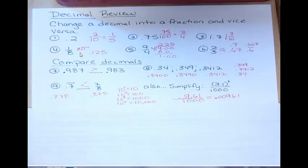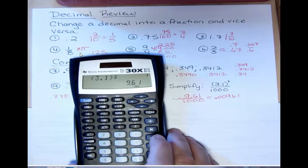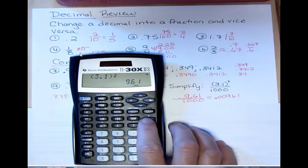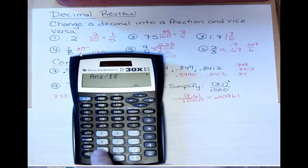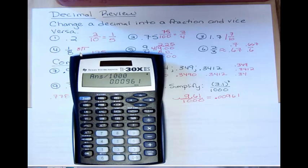But if you don't remember that, and you don't want to do it, take your number 9.61, or 9 and 61 hundredths, and divide by 1,000. And you'll see I was right. It was 0.00961. When you divide by a power of 10, you just move your decimal point.